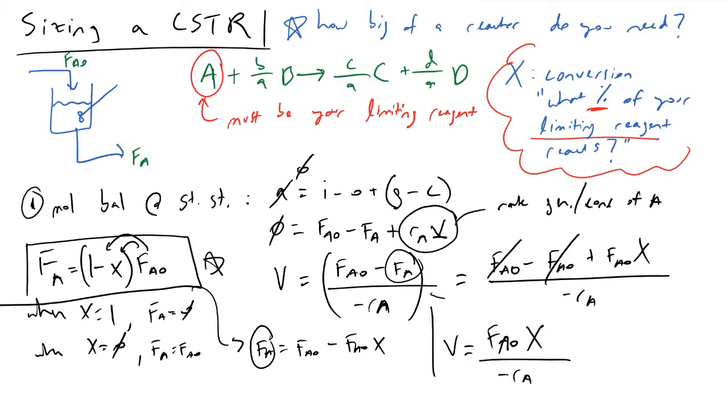This is the key equation to reach when you are sizing a continuous stirred tank reactor. An important thing to note here is how as we increase the demanded conversion, there's a positive correlation between conversion and volume. That should make intuitive sense.